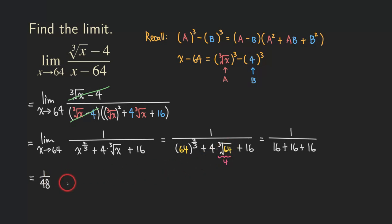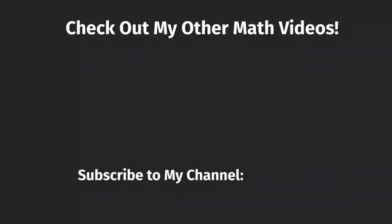So for this problem, we cannot use the technique of multiplying the top and bottom by the conjugate as you usually do with square roots — but we can use factoring with the difference of cubes. That's it for this problem. If you like this video please give me a like, subscribe to the channel, leave a comment, and share my videos. Thank you for watching — I'll see you next time.